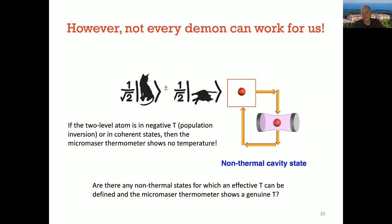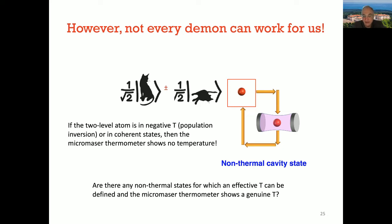If you just solve the master equation and find the state of the cavity in the long-time limit, you'll see it is no longer thermal. If you have not only a thermal atom but some superposition of these two states — with off-diagonal density matrix elements — the steady state is no longer thermal, no longer in the canonical Gibbs form. This cannot work as a thermometer; you cannot talk about the temperature of a Schrödinger cat state in this sense.